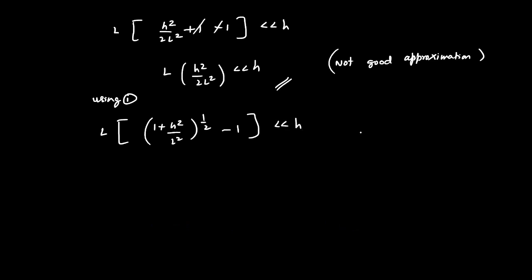See, we have this one plus x whole power n. Its expansion is one plus nx and n of n minus one by two factorial times x squared, and so on. So I'll be taking one more additional term here. If I use that here it is going to be L as it is, one plus one by two h squared by L squared, then I have to write plus...